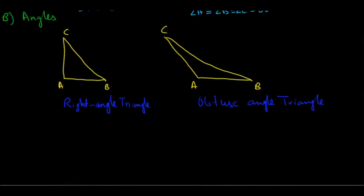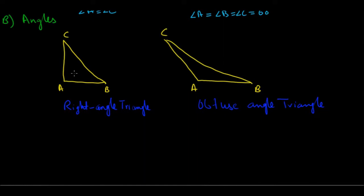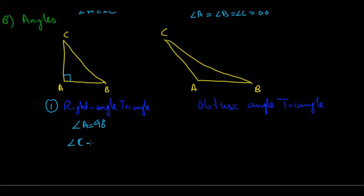Next is classification based on angles. The first is a right angle triangle, where one of the angles is 90 degrees — the square symbol represents this. Since angle A is 90 degrees, angles B and C must sum up to 90 degrees. Both angles B and C are acute angles, meaning they are each less than 90 degrees.